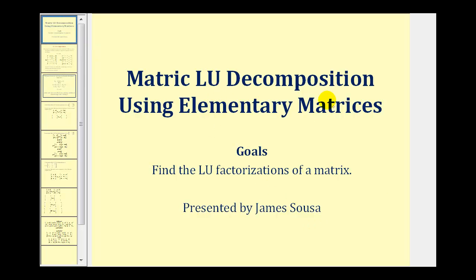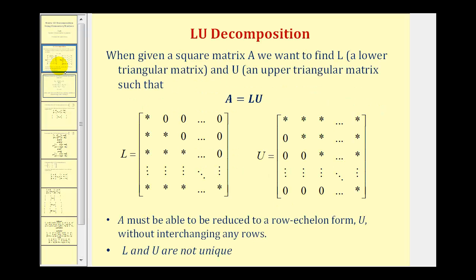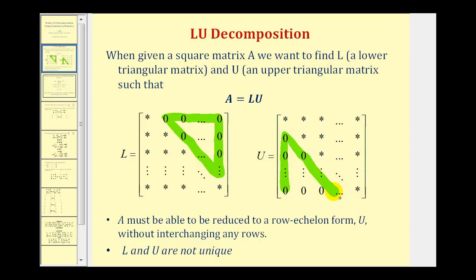Welcome to a lesson on matrix LU decomposition using elementary matrices. The goal of LU decomposition is to write matrix A, which is a square matrix, as a product of matrix L and matrix U, where matrix L is a lower triangular matrix and matrix U is an upper triangular matrix. A lower triangular matrix has zeros above the main diagonal, and an upper triangular matrix has zeros below the main diagonal. All the other elements can be zero or nonzero.